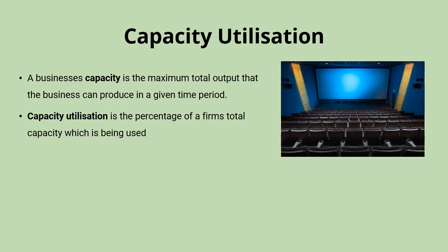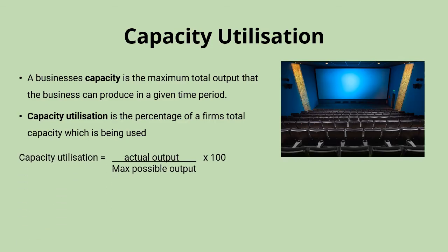Capacity utilisation is the percentage of that total capacity which is actually being used. So if you've only got 60% of the seats full in that cinema, then the capacity utilisation would be 60%. The calculation is: take your actual output, divide it by your maximum possible output at full capacity, and multiply by 100. You're essentially calculating your actual output as a percentage of what you could produce.